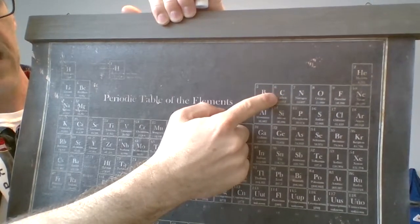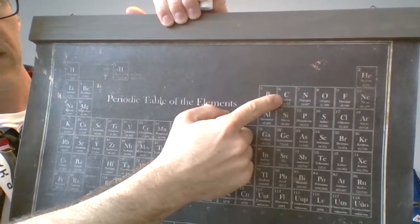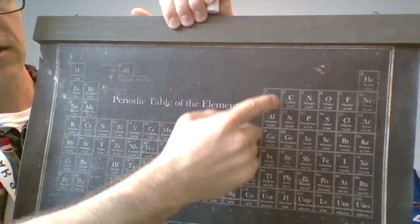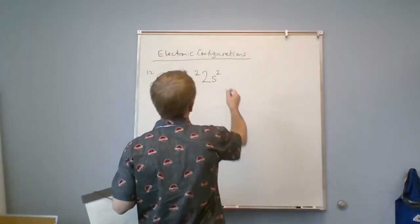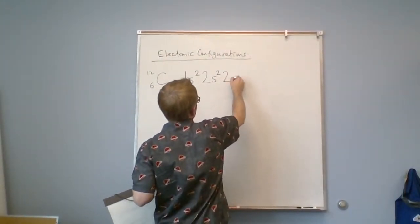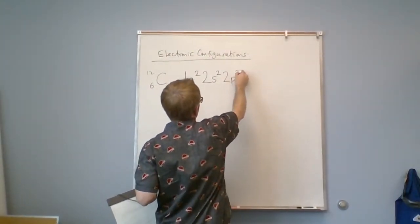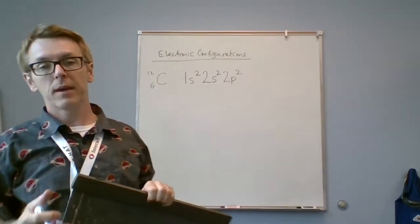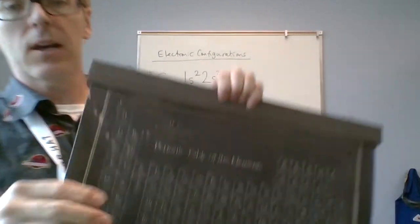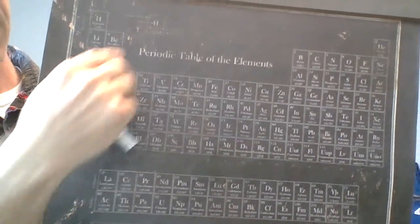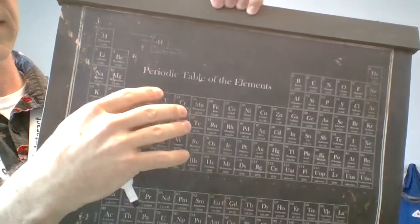So I'm on line two, p block, two boxes — giving me 2p². I stop here; I've landed at carbon by reading the periodic table. Let's put the periodic table down and inspect what we have.